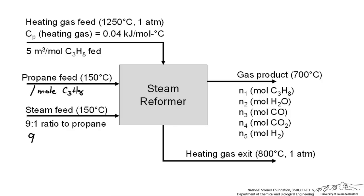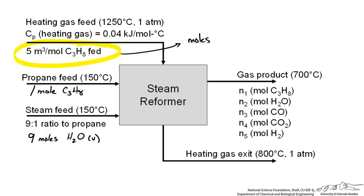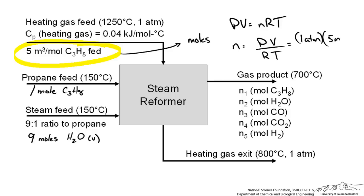Choosing one mole of propane automatically tells us that 9 moles of steam will enter along with it. It is useful to convert the heating gas flow rate of 5 m³ per mole into moles. At high temperatures and low pressures, the ideal gas law is an appropriate equation of state. Using PV = nRT with P = 1 atm, V = 5 m³, R = 8.2×10⁻⁵, and T = 1523 K,